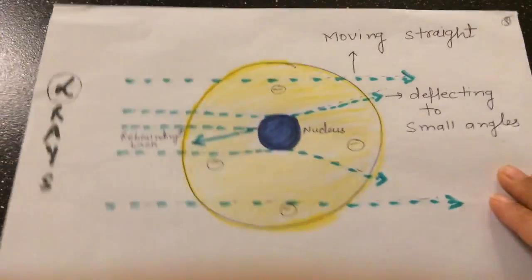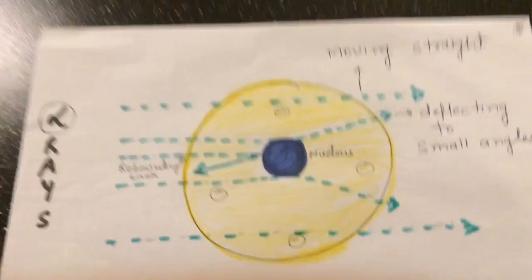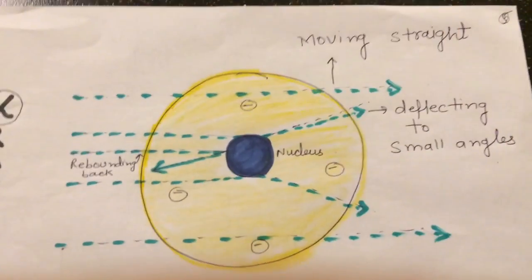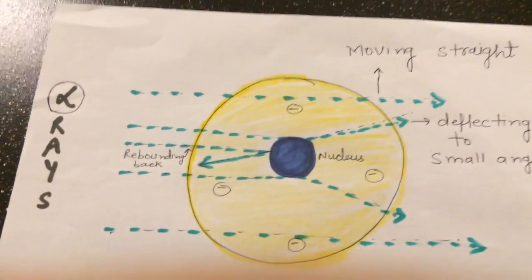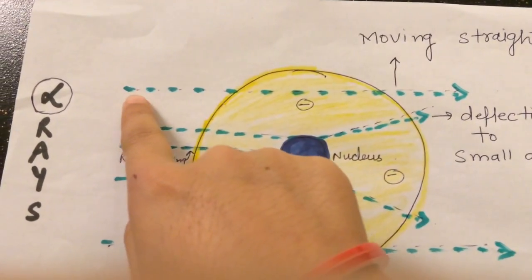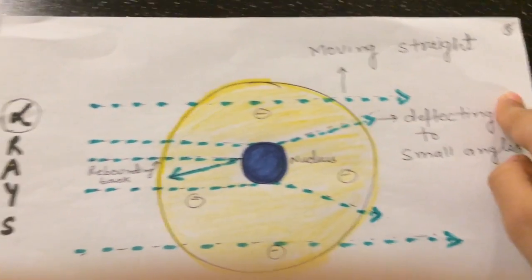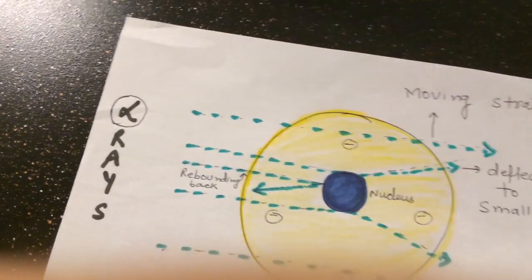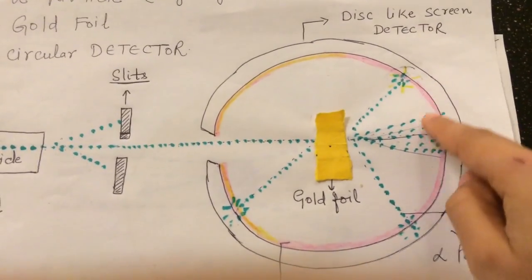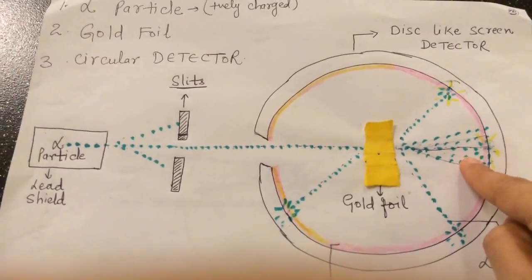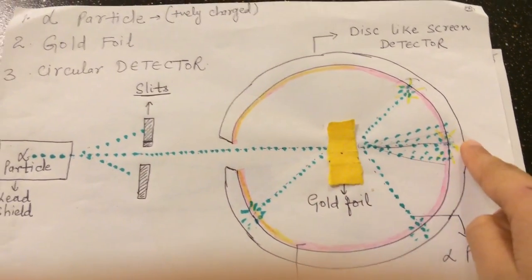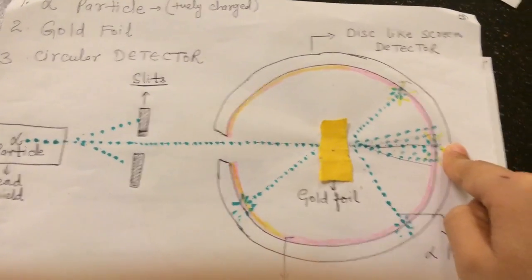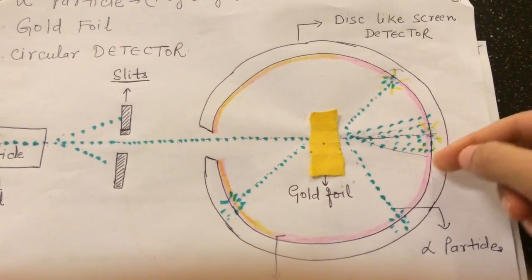Consider a zoomed image of a gold atom with alpha particles striking it. The first observation was that most of the alpha particles passed straight through the gold atom without any deflection and without any obstacle. That is why in the diagram, the area directly behind the gold foil is glowing the brightest — most alpha particles passed straight through.